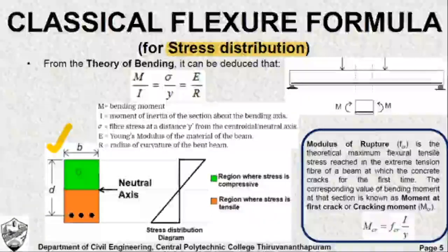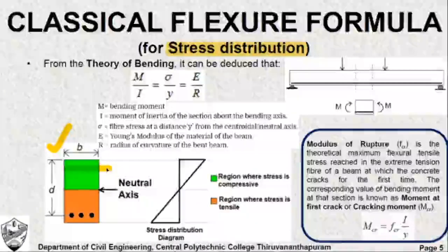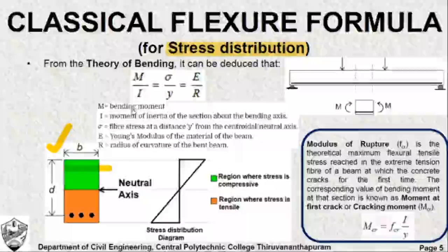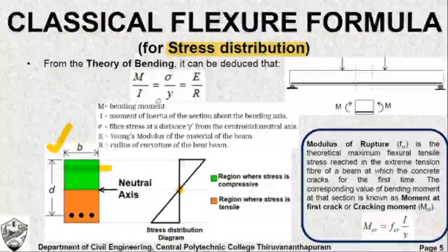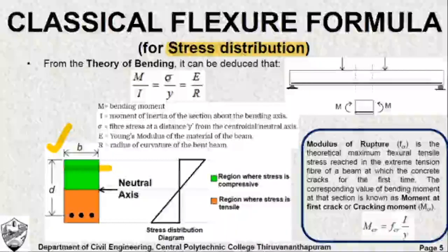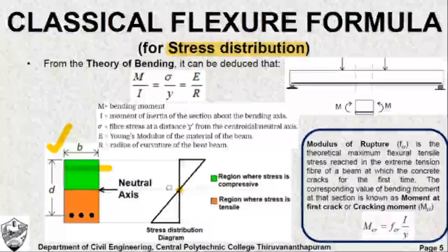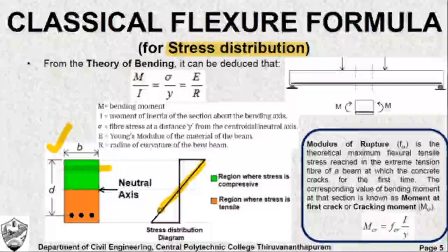Using the equation M/I = σ/Y, you can easily find the bending stress. This equation shows that σ is proportional to Y, because M and I are constant at any particular section. When Y equals zero — that is, at the neutral axis — σ equals zero, which means at the neutral axis there is no stress. As you move away from the neutral axis, stress is also increasing, giving a straight-line stress distribution.